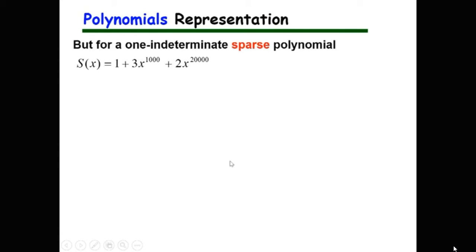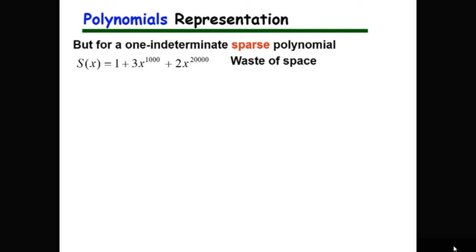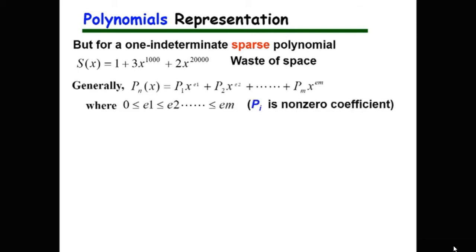But for a sparse polynomial — for example, one where most of the items are zero and it has only three non-zero items — using that representation results in waste of memory space. For such a sparse polynomial, we only represent its non-zero items, where pi is the non-zero coefficient and exponents are in ascending order.